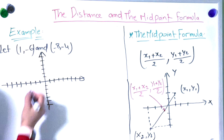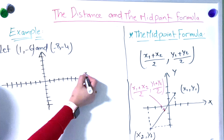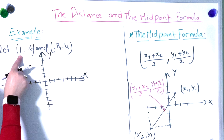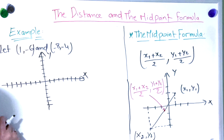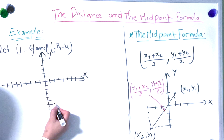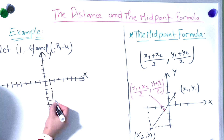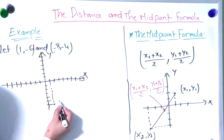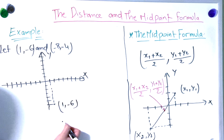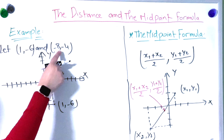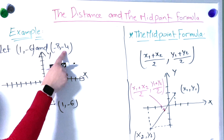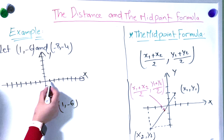We have the x-axis and y-axis. The first point has x = 1 and y = −6, so we plot (1, −6). The second point is (−8, −4), with x = −8 and y = −4.